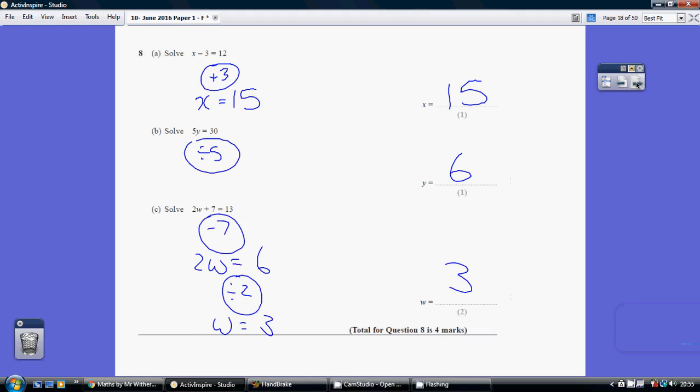Question 8. Basic algebra. What number take away 3 gives you 12? Well, that's 15. If you want to set it out by making adjustments, how do we undo a minus 3? We add 3 to both sides. X equals 15.